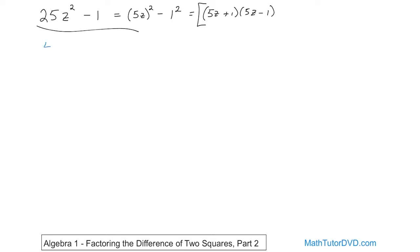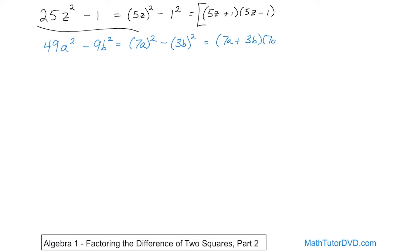Second problem: 49a squared minus 9b squared. You ask yourself, do I have a perfect square in each term? Well, 7 times 7 is 49, so this will be 7a squared. Then there's a minus sign. 3 times 3 is 9, so we have 3 — don't forget the b, it has to be squared. So this is exactly the difference of two squares. You take the first term plus the second term, then the first term minus the second term: 7a plus 3b, 7a minus 3b. That's the final answer.